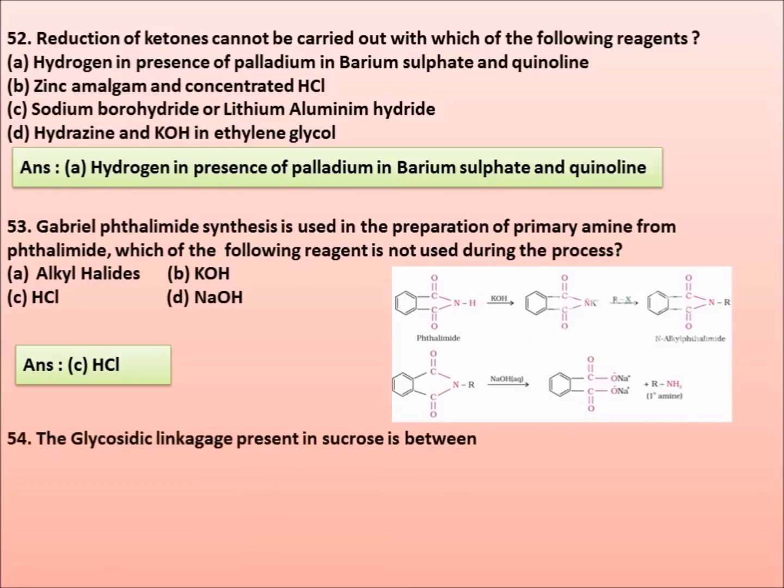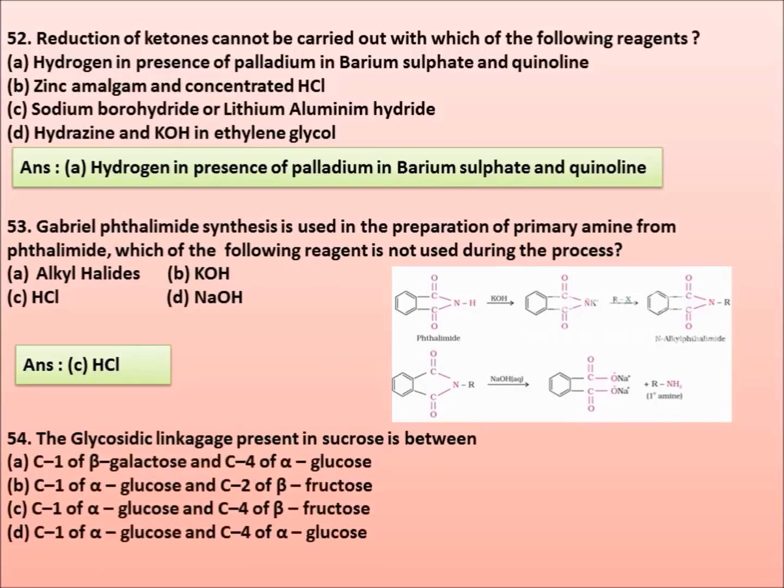Fifty-four. The glycosidic linkage present in sucrose is between: C1 of beta-galactose and C4 of alpha-glucose, C1 of alpha-glucose and C2 of beta-fructose, C1 of alpha-glucose and C4 of beta-fructose, C1 of alpha-glucose and C4 of alpha-glucose. Correct answer is option B: C1 of alpha-glucose and C2 of beta-fructose.